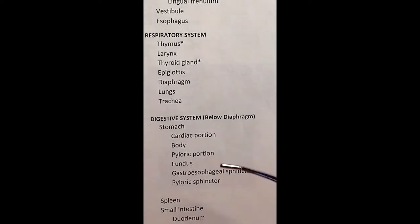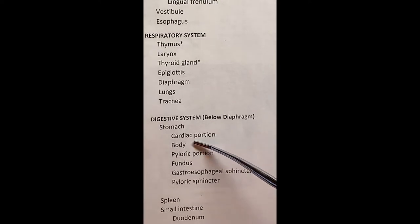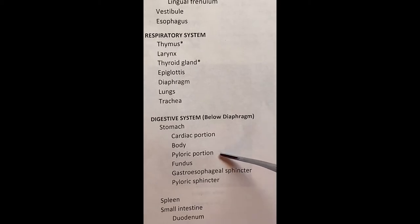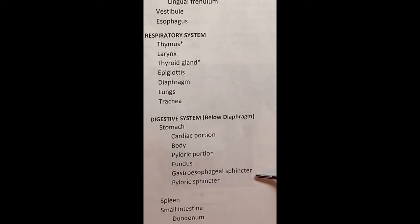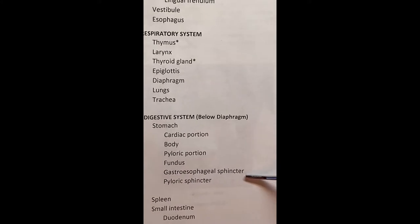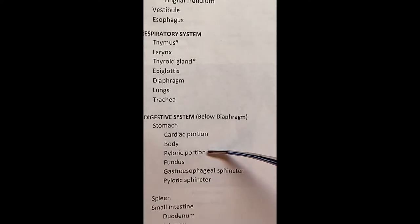The list of structures includes: the cardiac portion or region of the stomach, the body of the stomach, the pyloric portion or region of the stomach, the fundus, the gastroesophageal sphincter — sometimes known as the lower esophageal sphincter — and the pyloric sphincter, which is associated with the pyloric region.